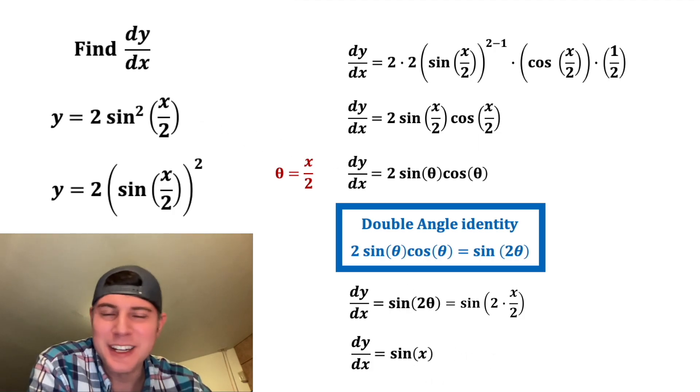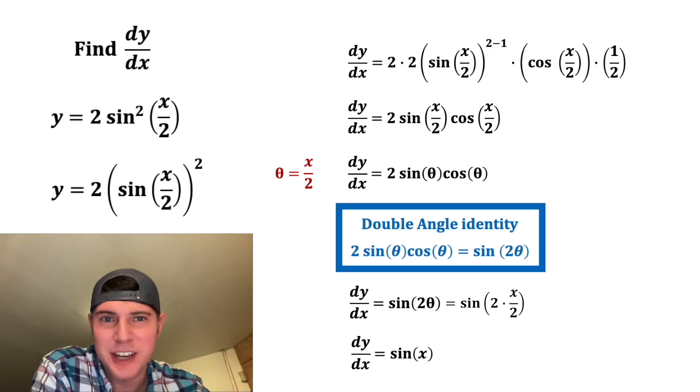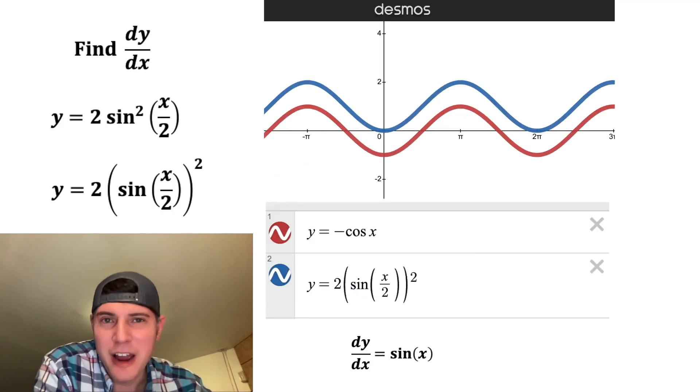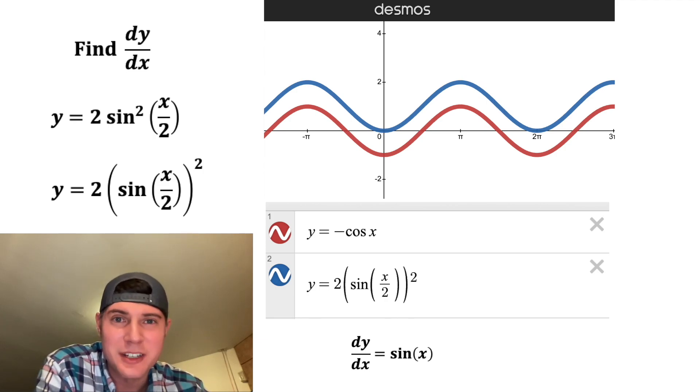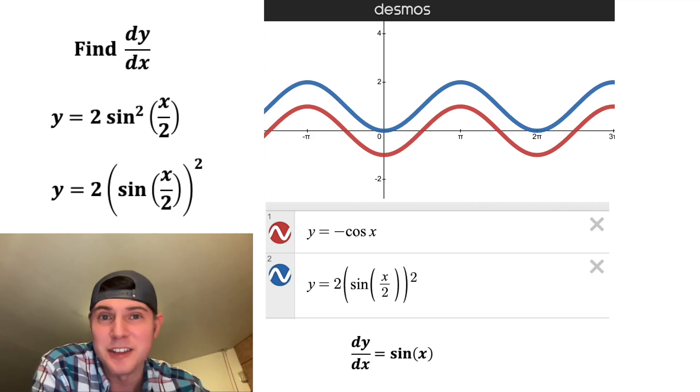You might be thinking, wait, isn't the derivative of negative cosine also equal to sine of x? And that's true. Here's a graph of both of them right here. And you can see why their derivatives are equal, because the slope on each of them at every given point is the exact same. But they are not the same graph.